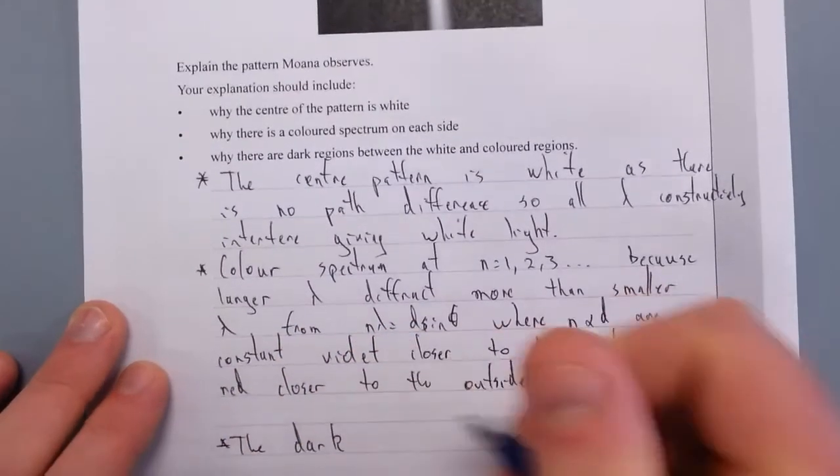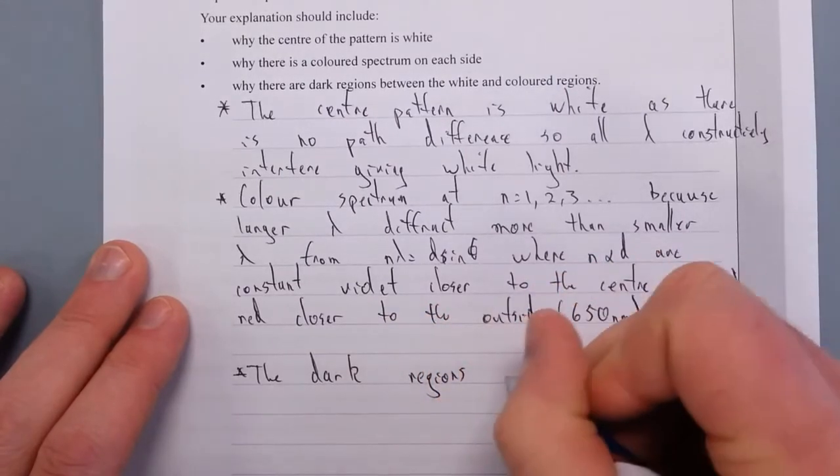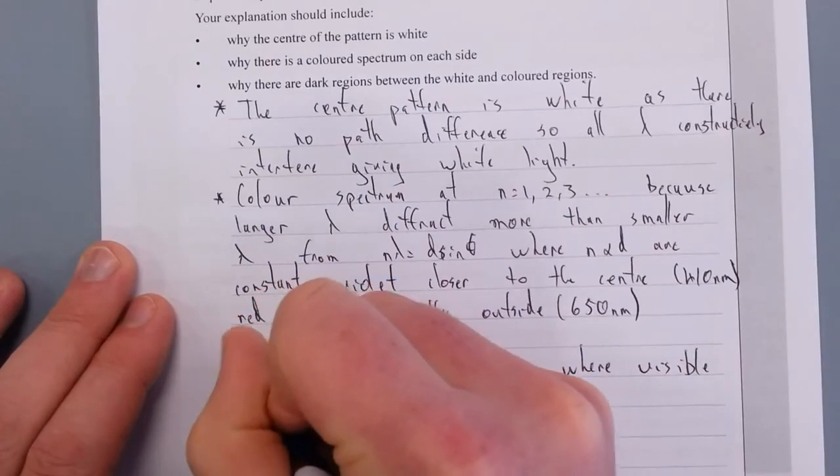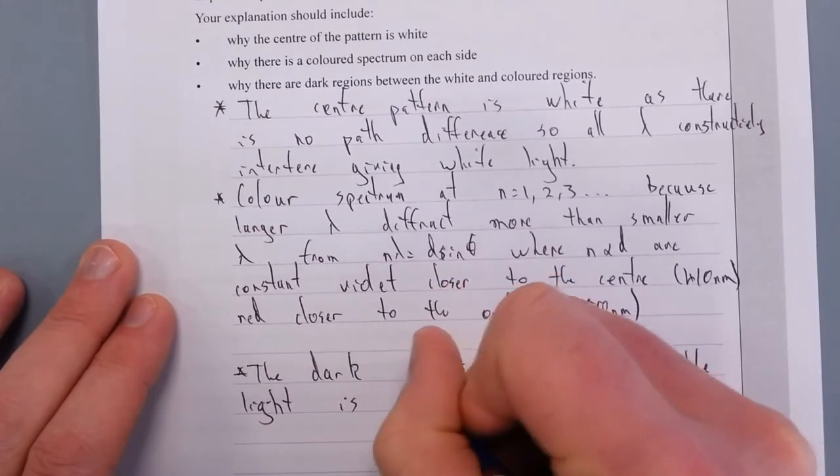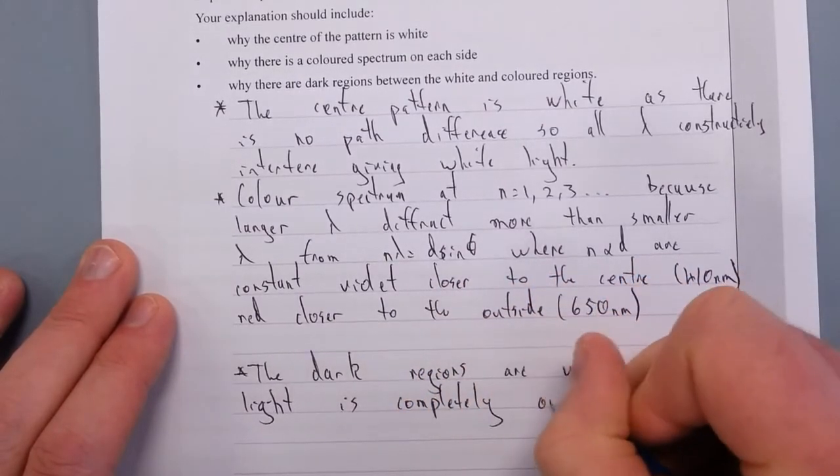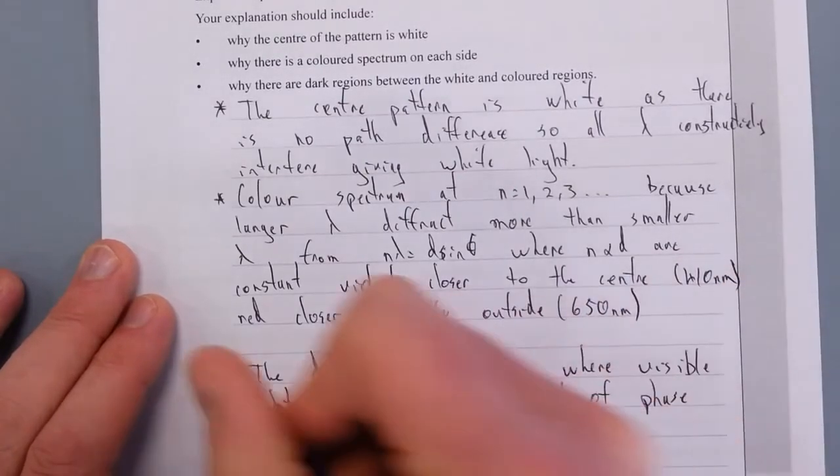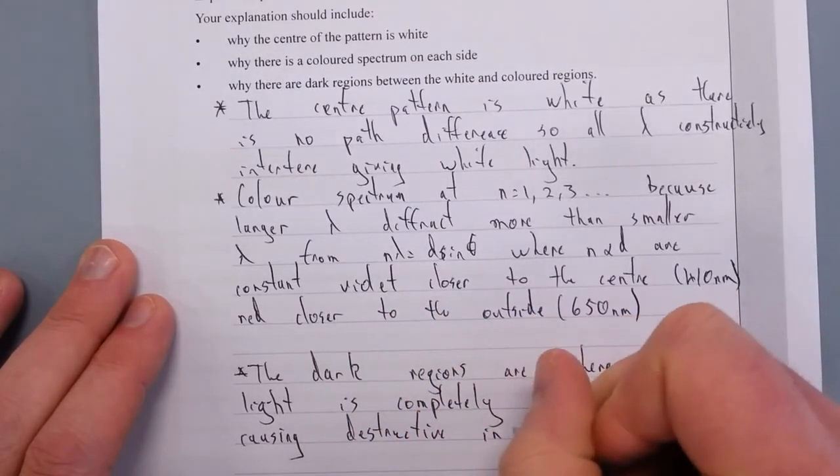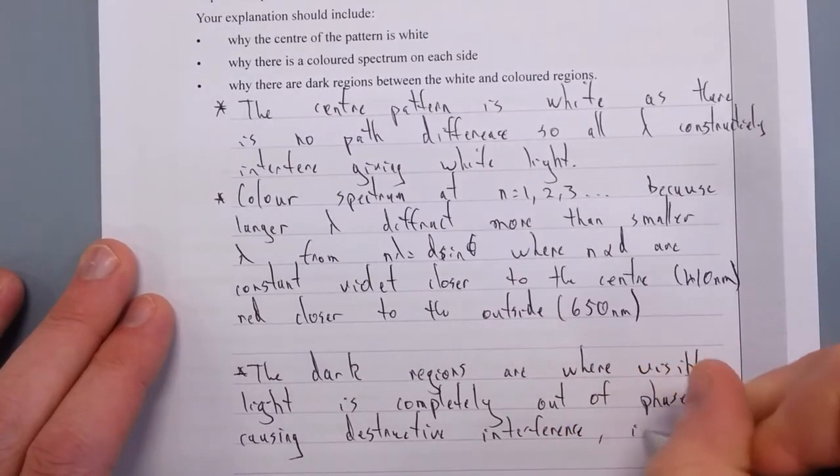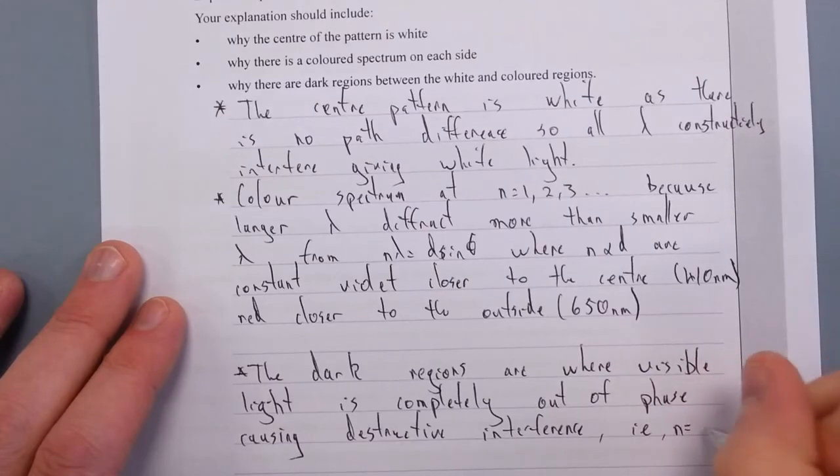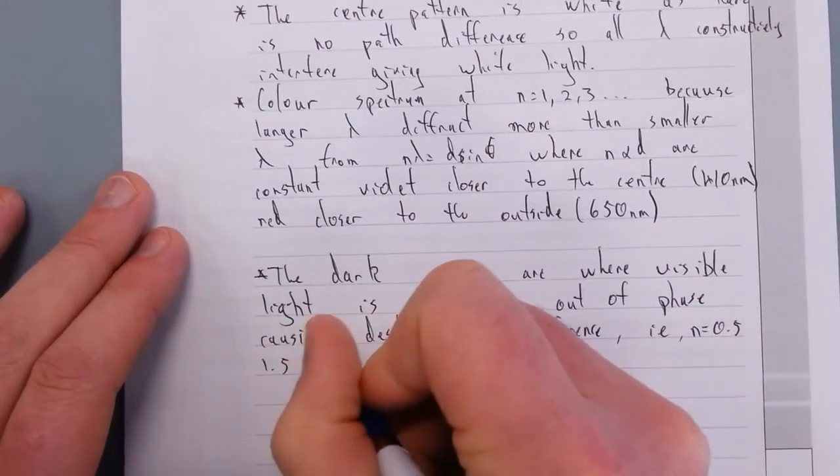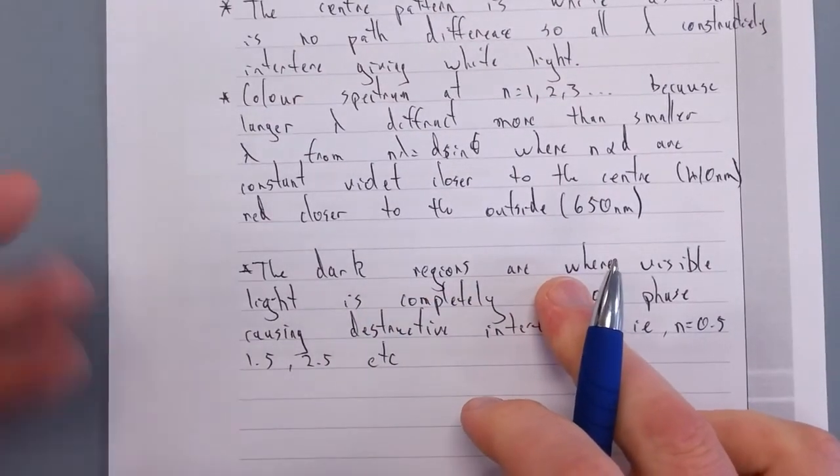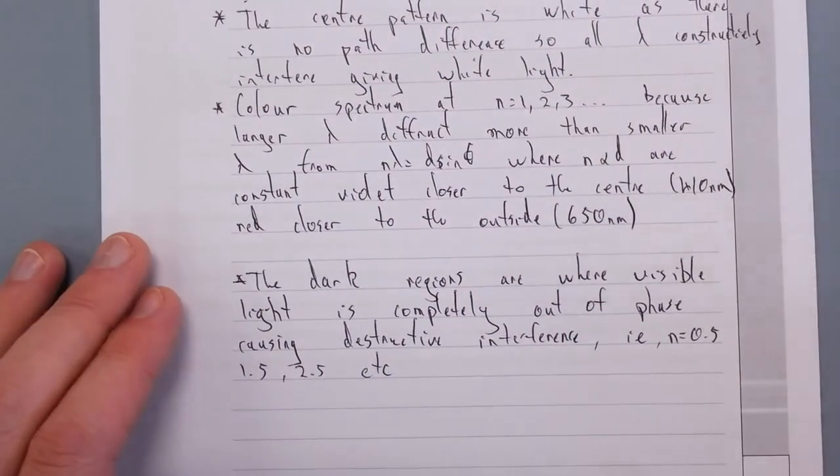Dark regions—I'll just have to skip ahead because my students are about to come in—regions where visible light is destructively interfering. Light is completely out of phase, causing destructive interference, i.e., n is equal to 0.5, 1.5, 2.5, etc. So you'll still actually get like UV light and infrared light in those dark regions, but not visible light.